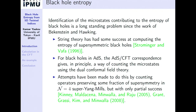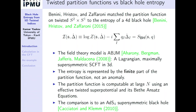The identification of the microstates related to black holes has been a longstanding problem since the work of Bekenstein and Hawking. There has been some success with notable examples. In principle, ADS-CFT should allow us to count the microstates in a more or less straightforward way. In 2015, Benini, Hristov, and Zaffaroni managed to make a match between the partition function of the twisted index on S2 times S1 and the entropy of a 4D black hole.